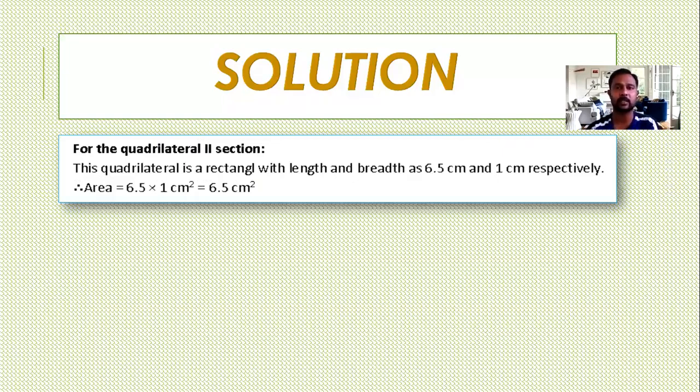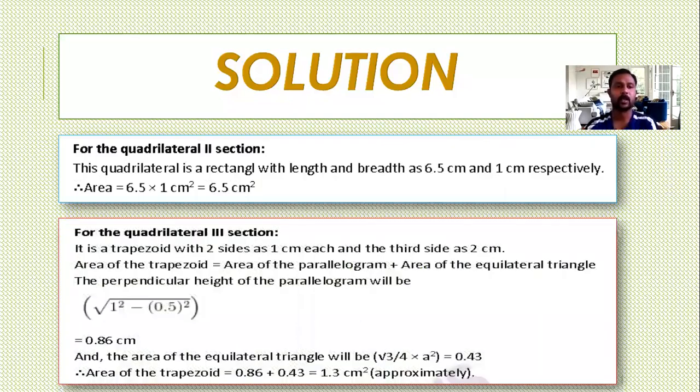So one and two sections parts are completed. Go for the third part. For the quadrilateral 3 section, it is a trapezium with two sides as 1 cm and the third side as 2 cm. Area of the trapezoid. How will you find the area of the trapezoid? Draw a parallel line. When it is equal to area of the parallelogram plus remaining, it will be an equilateral triangle.